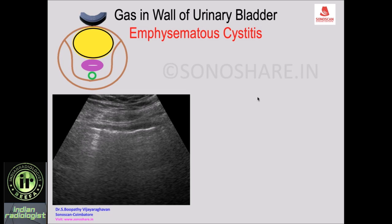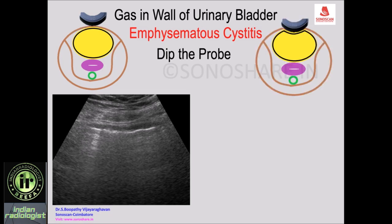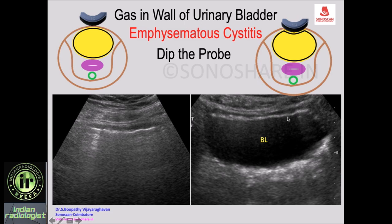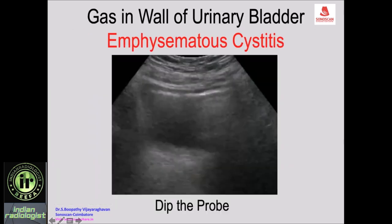If the gas is in the wall of the urinary bladder — emphysematous cystitis — there will be gas within the wall, and some will also escape into the lumen. When you dip the probe, the luminal gas gets displaced, but the gas within the wall remains the same. You see the wall and in the wall you see the echogenic line, confirming that the gas is in the wall, not just the lumen.